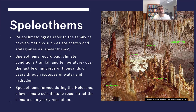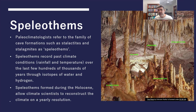Some of the best speleothem studies focus on Holocene cave formations, allowing climate scientists to do climate reconstruction at yearly resolution. Speleothems don't have consistent growth rings in the way tree rings do, but they still have growth patterns and rings similar to those studied in dendrochronology.